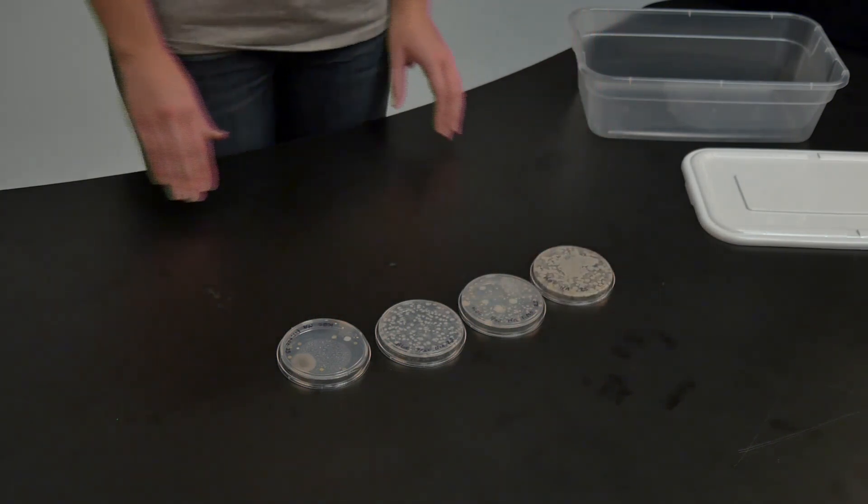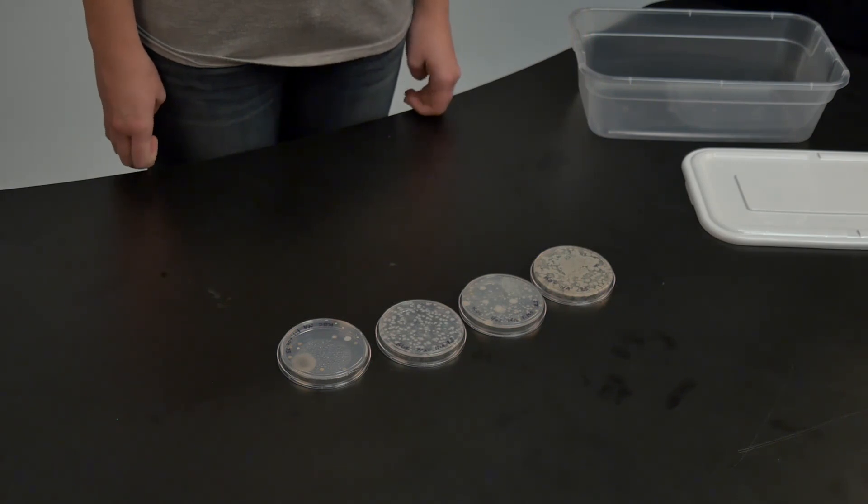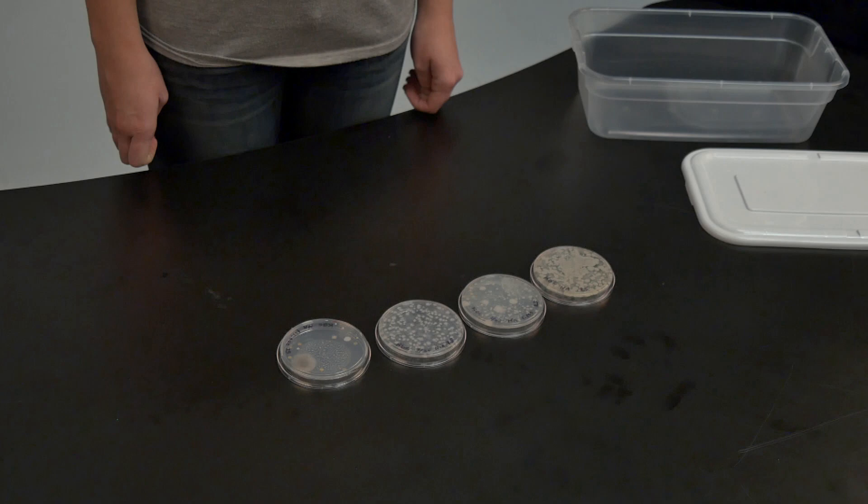Once you have finished counting the number of colony forming units on your petri dish, your instructor will show you how to calculate the total number of bacteria found in your original soil sample.